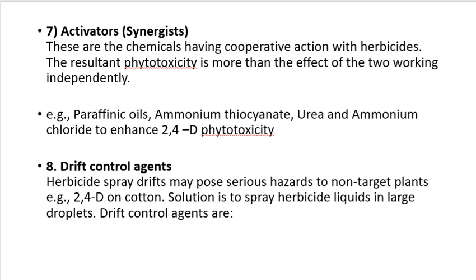Next, activators or synergates: these are chemicals having cooperative action with herbicides. The resultant phytotoxicity is more than the effect of the two working independently. e.g. paraffinic oils, aluminium thiocyanate, urea, and aluminium chloride to enhance 2,4-D phytotoxicity.